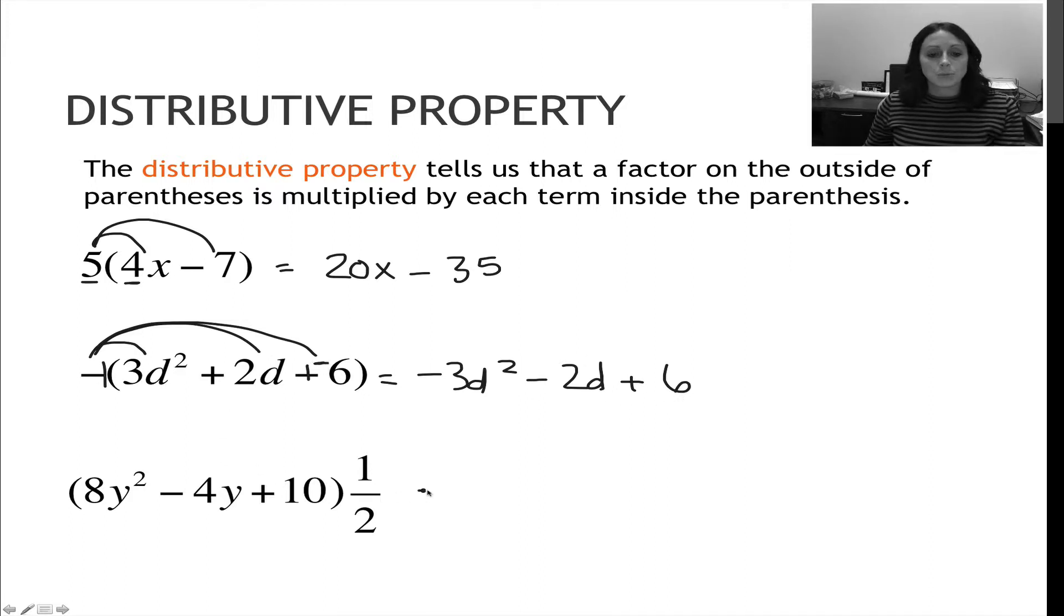And for my last one, as you can see, I've still got the distributive property, but the 1 half's at the end of the question instead of the beginning. It doesn't matter. So 1 half times 8y squared. When you multiply with fractions, just multiply by the top number and divide by the bottom number. That makes fractions much less scary.